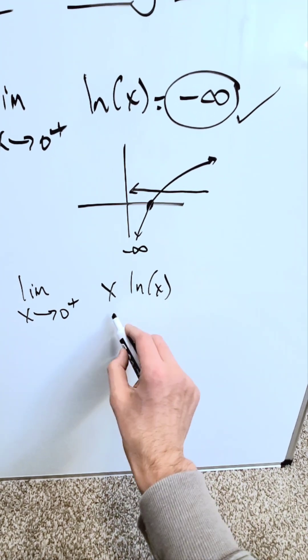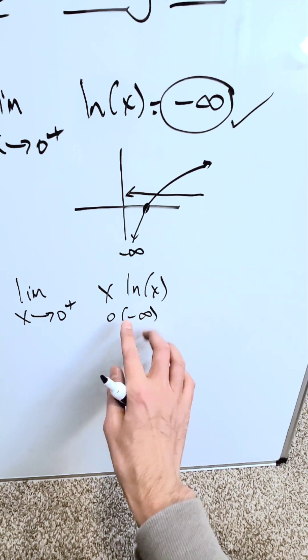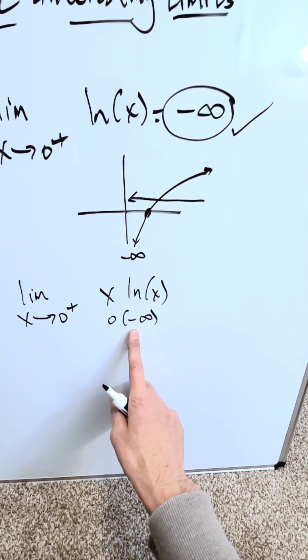Now if I put 0 in places of x, I have a 0 and a minus infinity. A product of these two, an indeterminate limit form. It's vague, it's ambiguous, but how do you evaluate this?